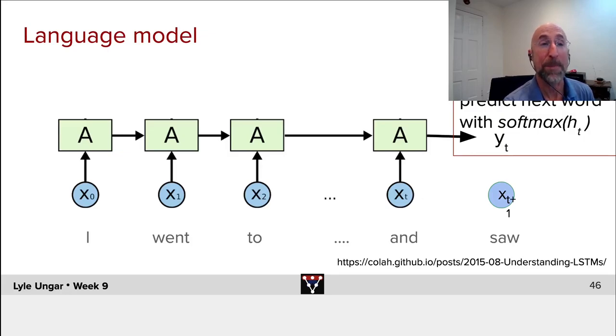That hidden state goes to the next copy of the neural net. This is unrolled in time. The embedding of the next word goes in, and so forth. And at the end of the subsequence, whatever it is, we then predict what the next word is going to be.